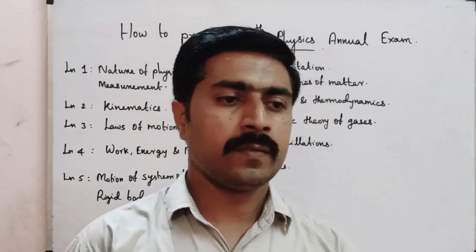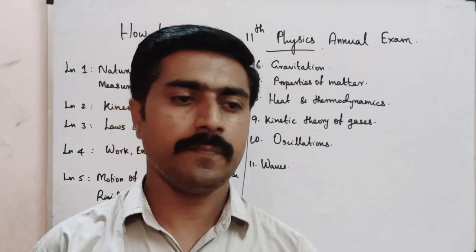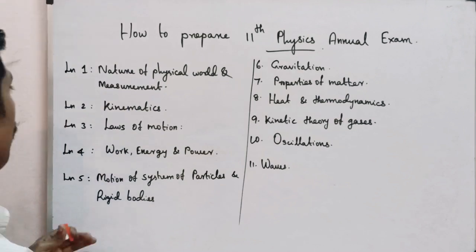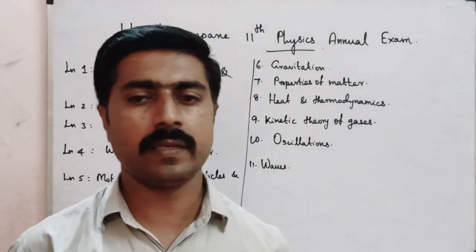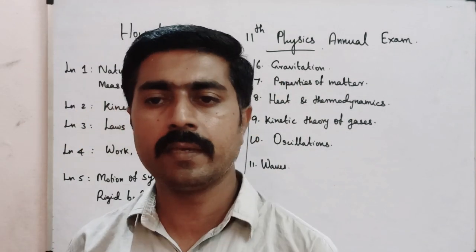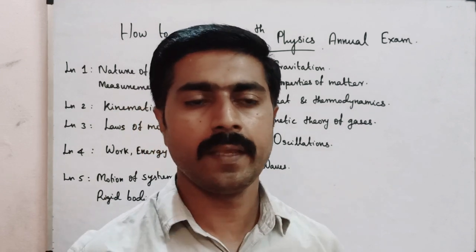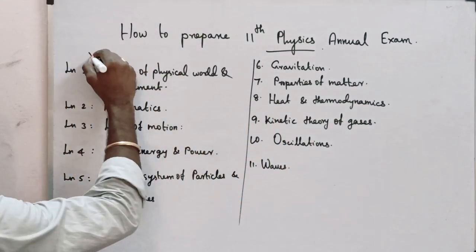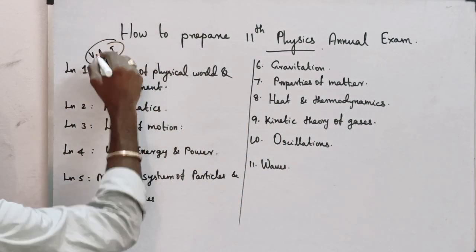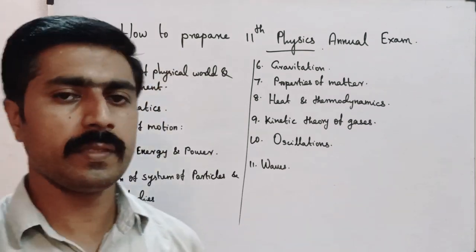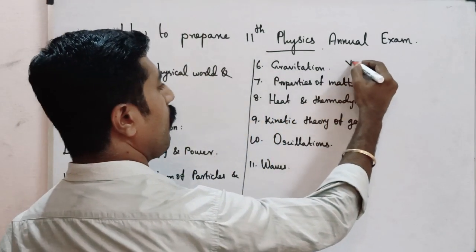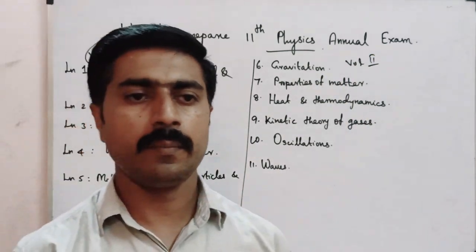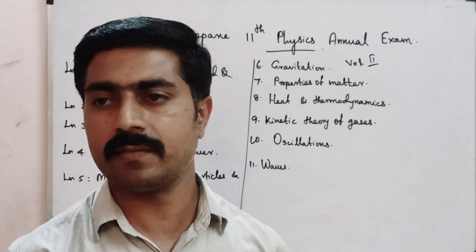Let's discuss what we have in 12th standard physics. In 11th standard physics there are 11 lessons. You can learn the language in English — there is a subject name. Volume 1 has 5 lessons and volume 2 has 6 lessons, so totally there are 11 lessons.